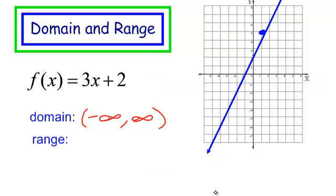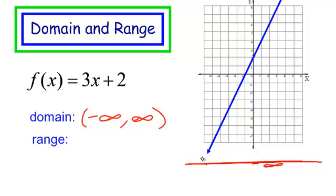What about the range? The y's start low and they end high. Here are the y's way down here at negative infinity — yes, my graph is touching down there. And the y's go up all the way to positive infinity.